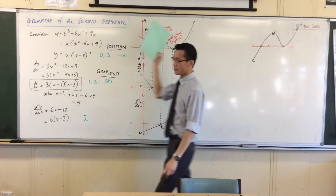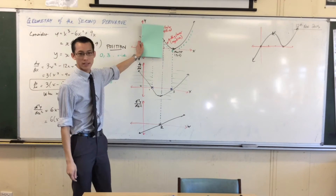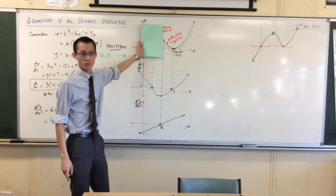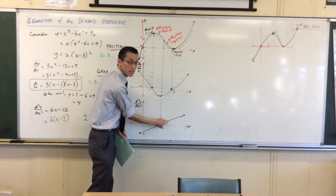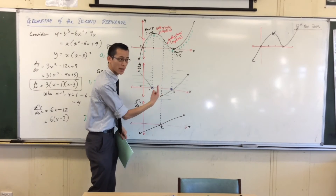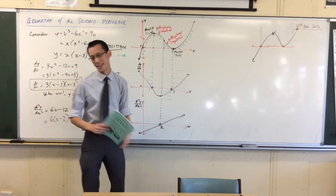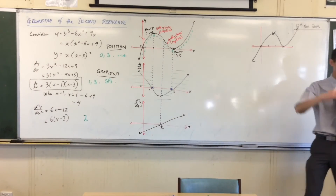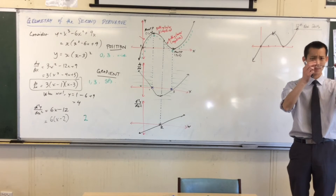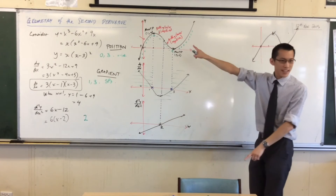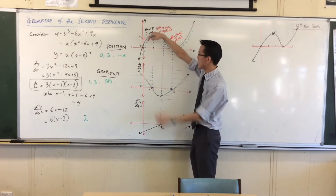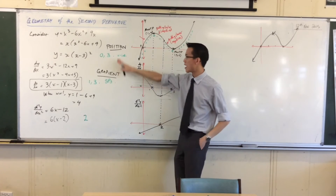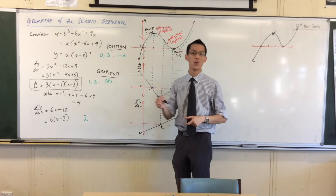Whereas if I move and cover up this side, it's still that kind of curved shape — it's like a cup — but it's not facing down anymore, it's facing up. That corresponds to the sign down here being positive. In lenses, we talk about concave and convex lenses. The word we use here, rather than position or gradient, is what we call concavity.